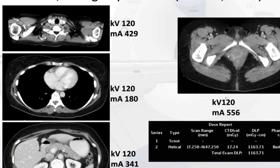If a patient wants to know their effective dose, we look at the end of each scan where CTDI volume and DLP are displayed. For example, a total exam DLP of 1163, multiplied by the constant K of 0.015 for abdomen and pelvis, gives us a dose of 17.5 millisieverts. That is higher because it is chest, abdomen, and pelvis — about 7 mSv for chest and 10 mSv for abdomen and pelvis.